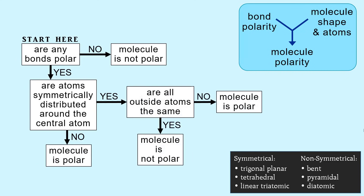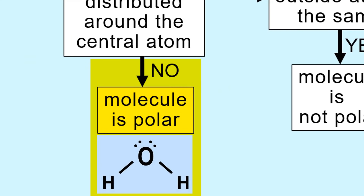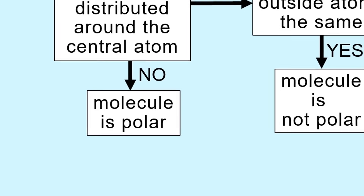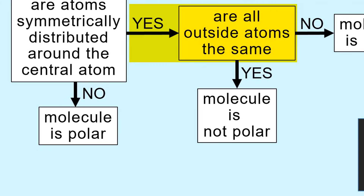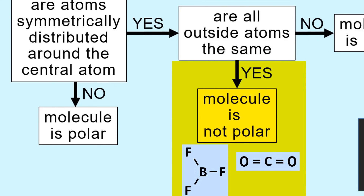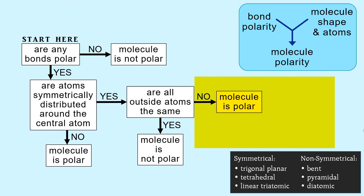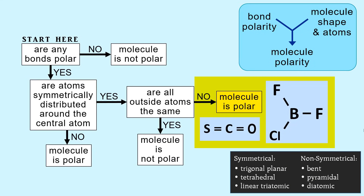The rest of the flowchart summarizes the examples we have just looked at. If polar bonds are not symmetrically distributed, then the molecule is polar. If they are symmetrically distributed, then you have to look at the outside atoms. If they are the same, that means the bond polarities cancel and the molecule is not polar. But if the outside atoms are different, that means the electronegativity differences give different magnitudes of bond polarities, and so they do not cancel.